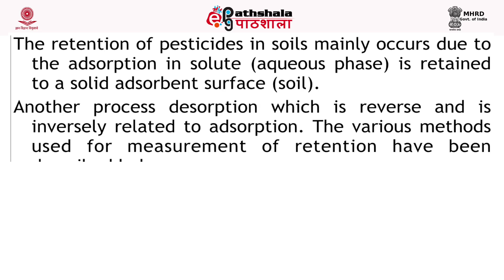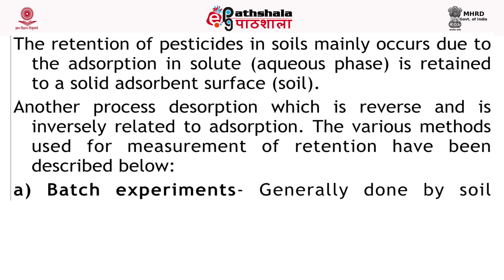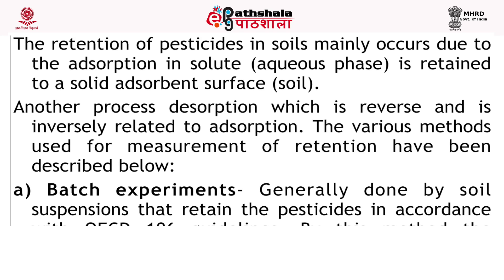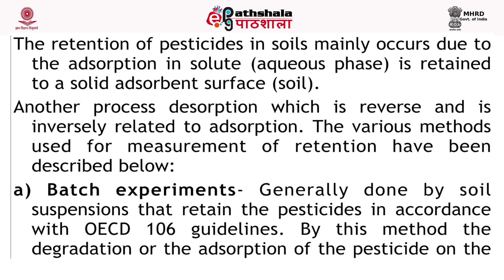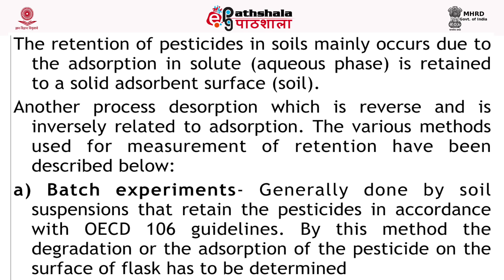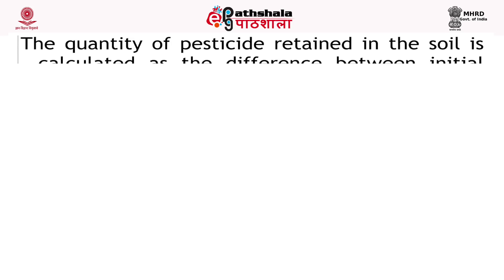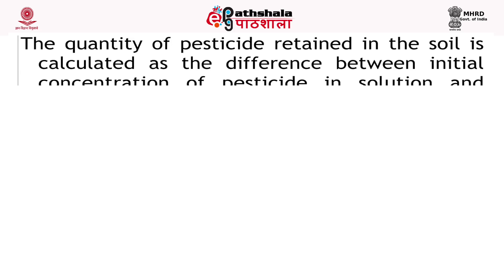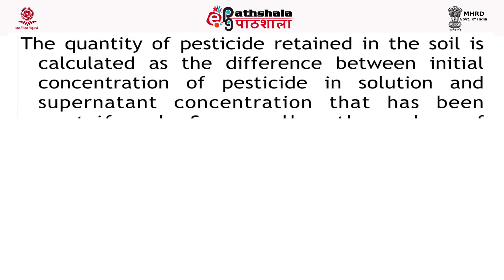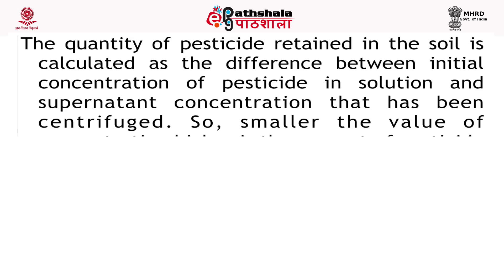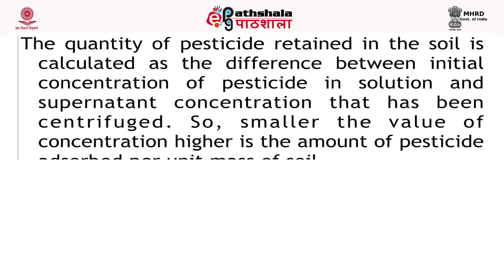The various methods used for measurement of retention are described below. First is batch experiments, generally done by soil suspensions that retain the pesticides in accordance with OECD 106 guidelines. By this method, the degradation or adsorption of pesticide on the surface of the flask has to be determined. The quantity of pesticide retained in the soil is calculated as the difference between the initial concentration of pesticide in solution and the supernatant concentration after centrifugation. Smaller the value, higher is the amount of pesticide absorbed per unit mass of soil.